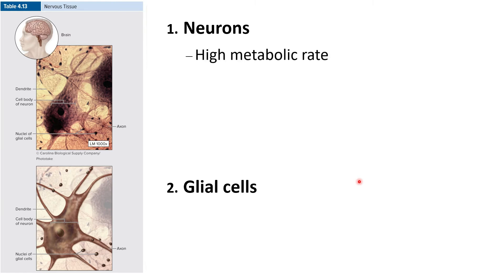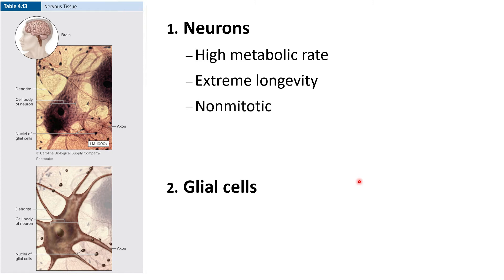Neurons are cells that have a very high metabolic rate — they need a continuous supply of oxygen and glucose in order to generate the amount of ATP that they need. They have extreme longevity; neurons formed during fetal development still function in elderly adults, so some of the neurons in your body have been there since before you were even born. Neurons are non-mitotic, meaning they can't divide. Mitotic activity is lost during fetal development except in certain areas of the brain and with the neurons involved in your sense of smell.